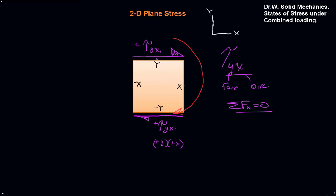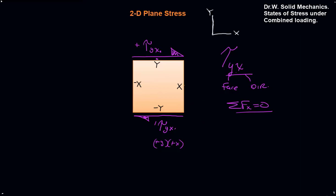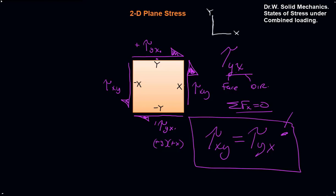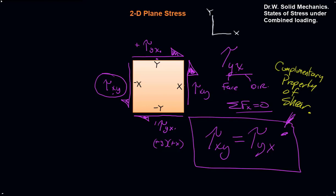Interestingly, these two create a couple — a moment generated by two equal and opposite forces a distance apart. We can't have a couple because the sum of moments also has to be zero. So on the x-faces we'd have tau x-y, and summing vertical forces we'd need another tau x-y. In order for the couple to be cancelled, tau x-y must equal tau y-x. That's the complementary property of shear: if we have a shear value on one face, we'll have the same magnitude on all other faces. All we need is one value to know all four.